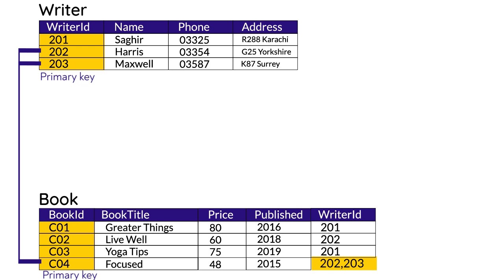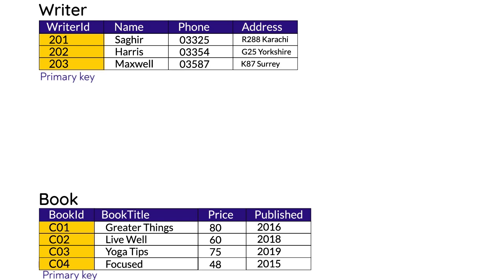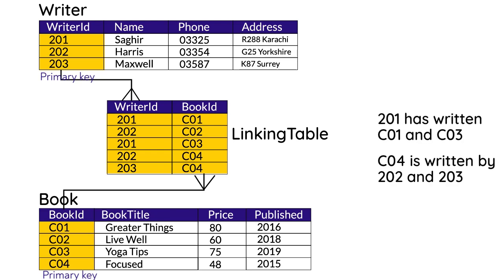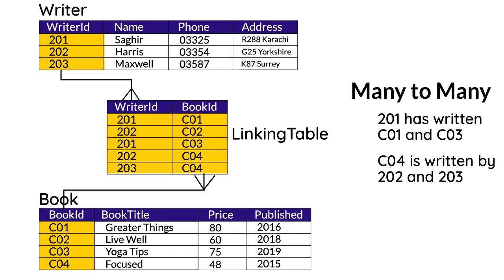The way to join many-to-many tables is by using a linking table. A linking table only contains the primary keys of both tables linked by the many-to-many relationship. In this example, writer 201 has written two books — C01 and C03 — as shown in the linking table. Similarly, book C04 is written by two writers, 202 and 203. That's how many-to-many relationships are represented. There is no other way to show this, not even with foreign keys, so foreign keys are not used in many-to-many relationships.